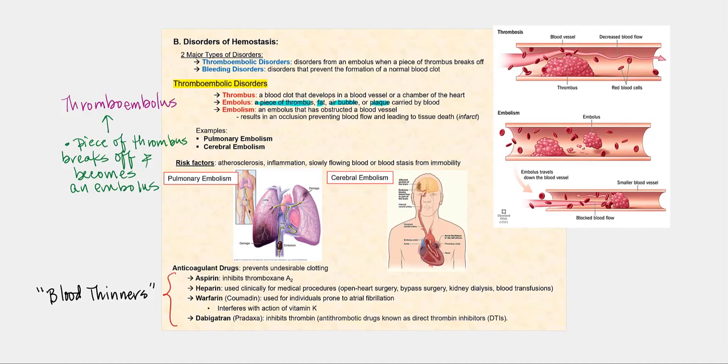We'll begin with thromboembolic disorders. What is a thrombus? A thrombus is a blood clot that develops in a blood vessel or a chamber of the heart. So right here is a thrombus. And should a piece of this thrombus break off, then now we refer to that as an embolus.